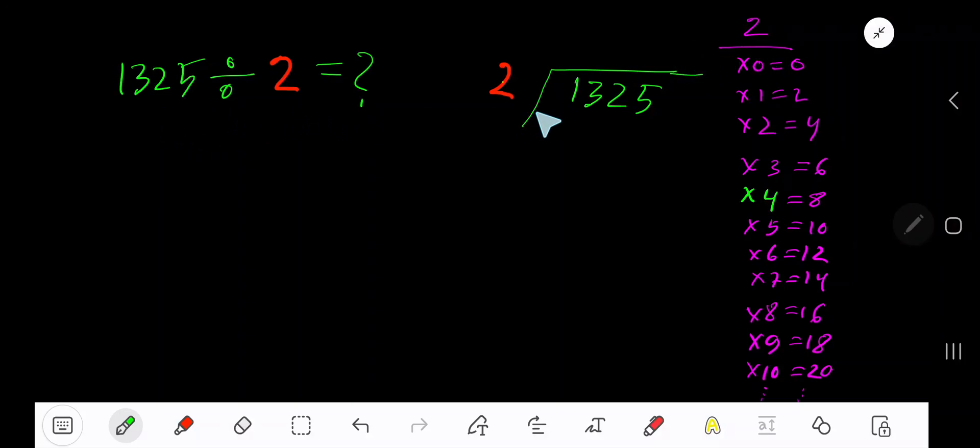1325 divided by 2. Here 2 is the divisor, so we need the multiplication table of 2. 2 times 0 is 0, 2 times 1 is 2, 2 times 2 is 4. To find the multiplication table of 2, just start with the previous step: 0 plus 2 is 2, 2 plus 2 is 4, 4 plus 2 is 6, 6 plus 2 is 8. This process continues. Now start from left to right.